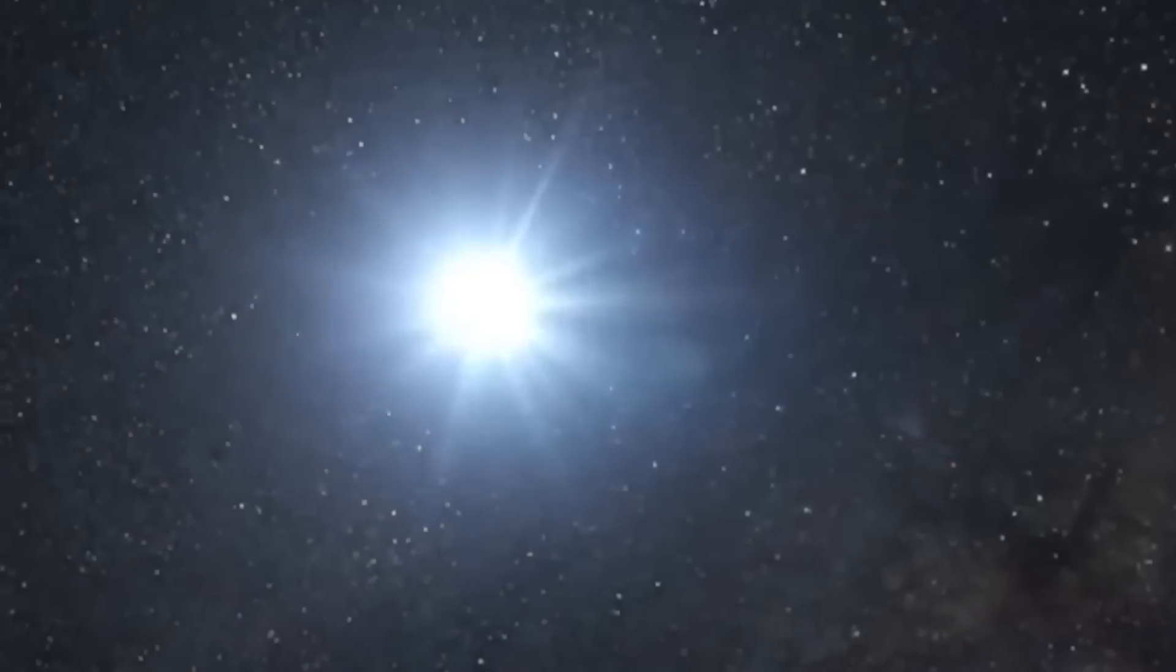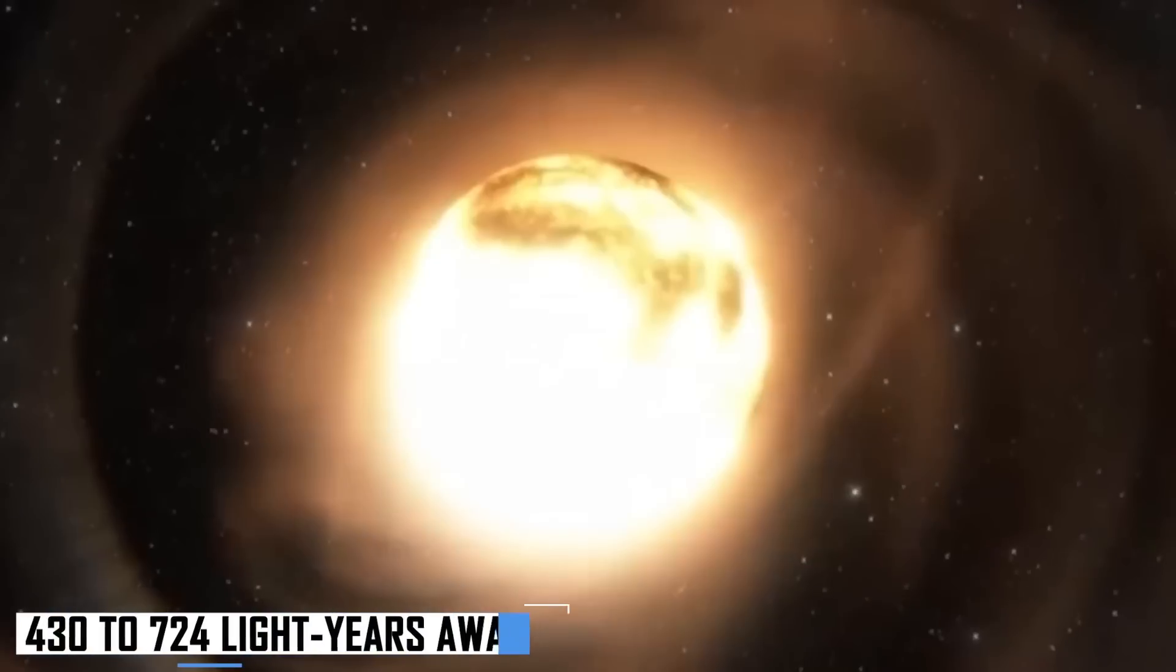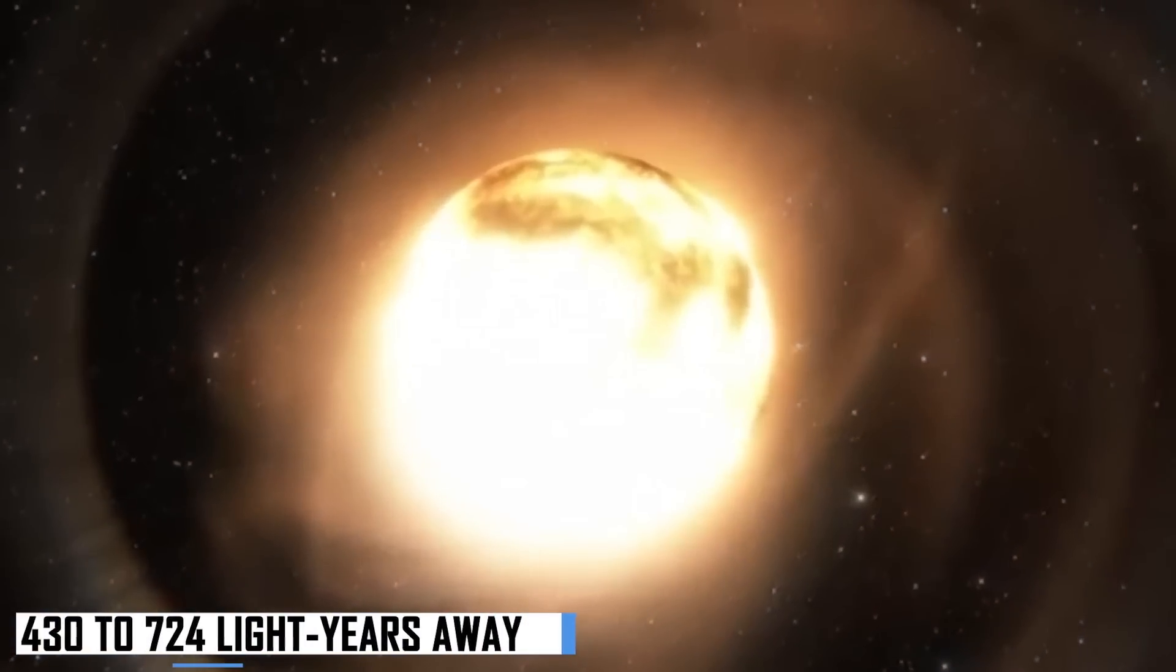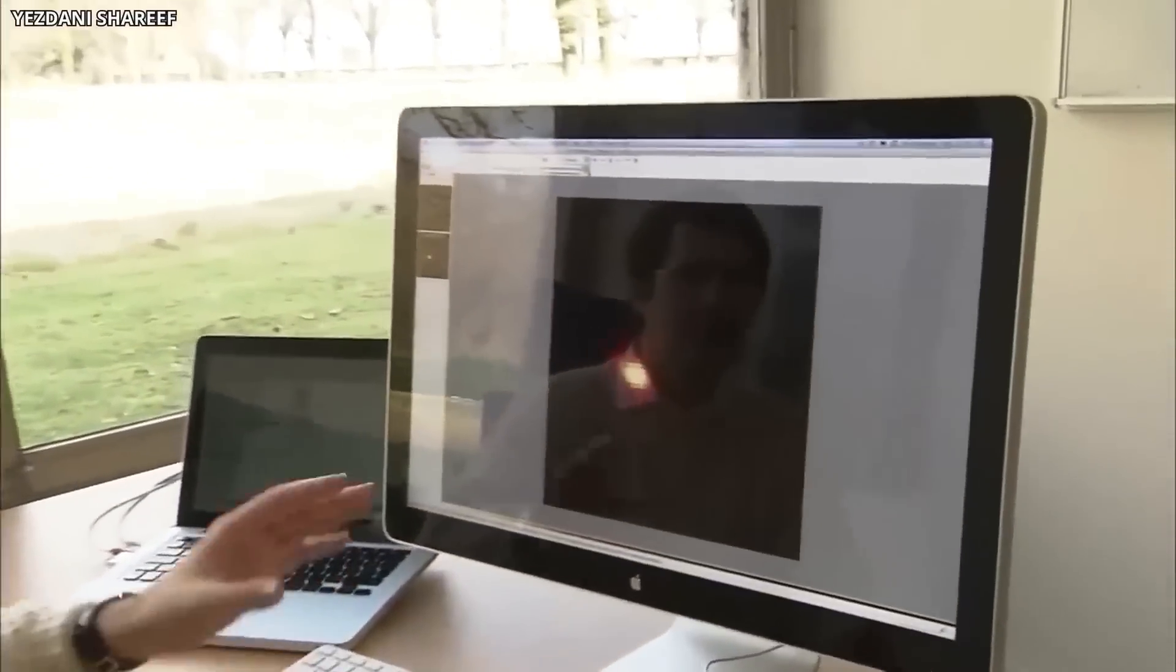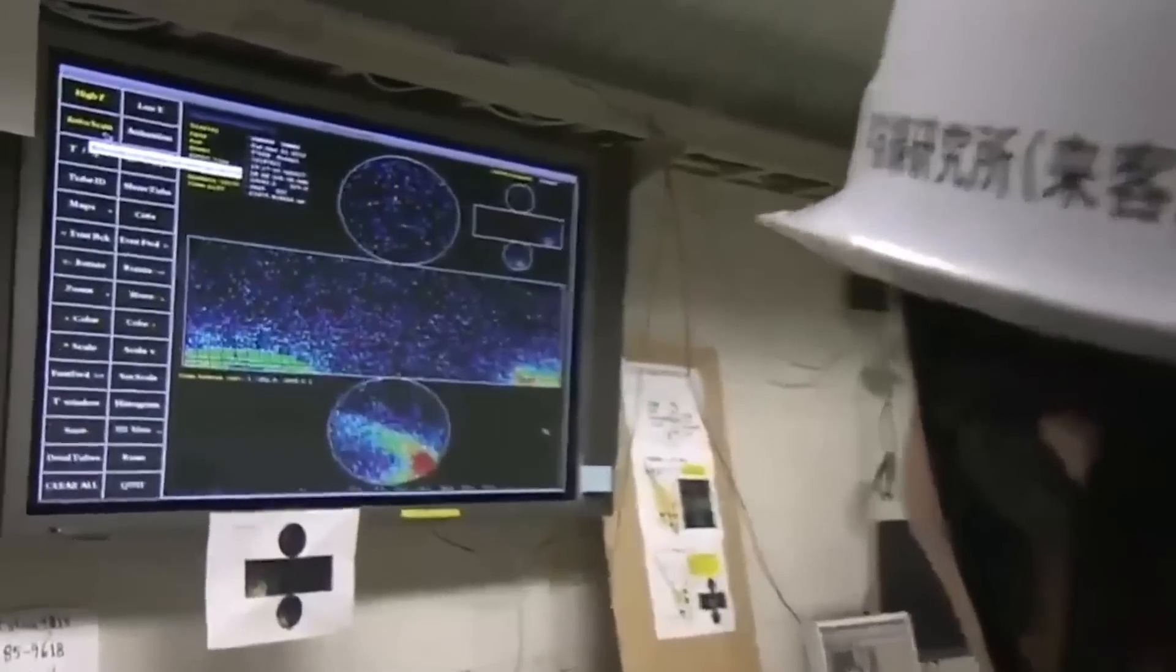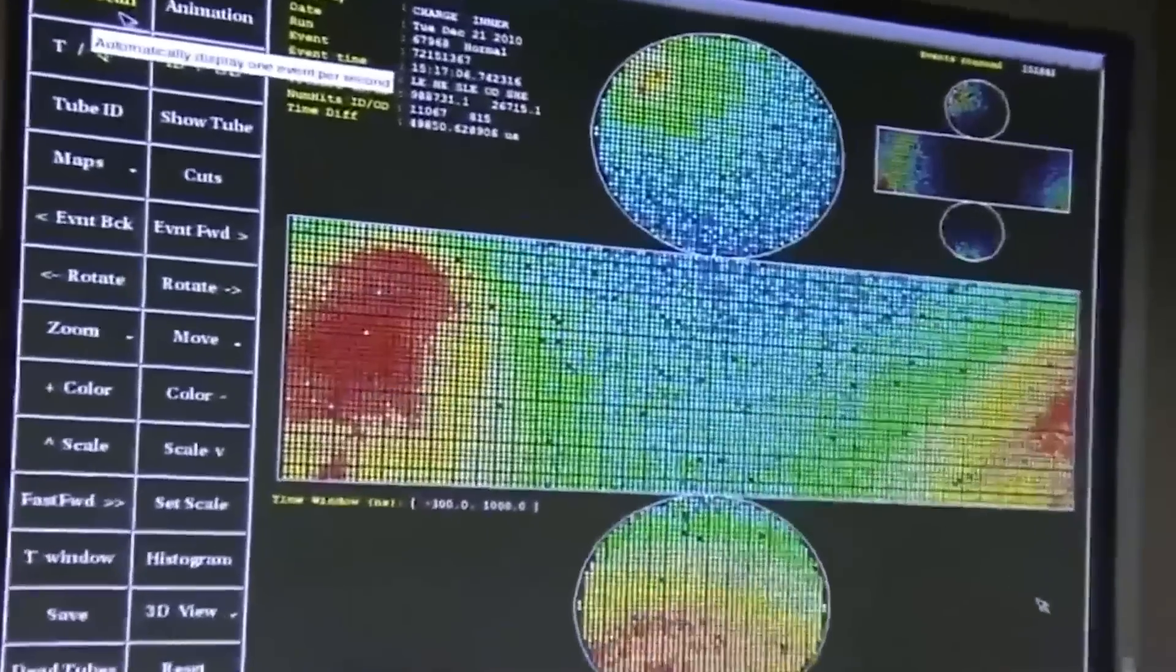Betelgeuse is one of the closest stars to the Earth, believed to be anywhere from 430 to 724 light-years away. Bear in mind that an explosion of a star as big as Betelgeuse would be far more devastating than the average supernova, and this has understandably led to a lot of panic among some astronomers.